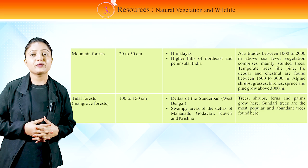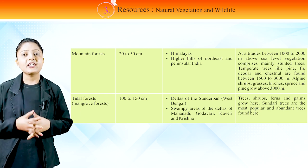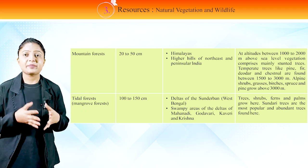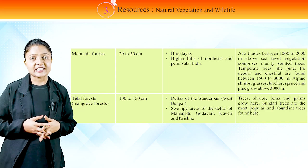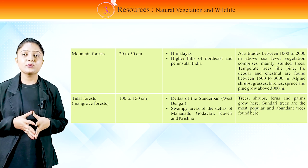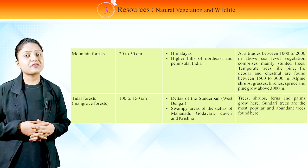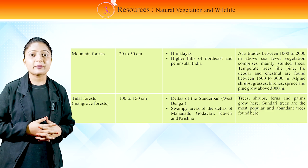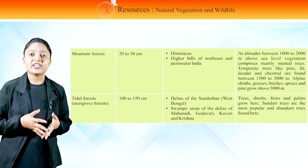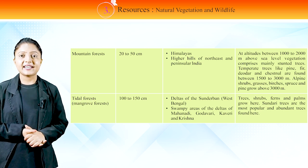Mountain forest: Rainfall 20 to 50 cm. Location: Himalayas, higher hills of northeast and peninsular India. At altitudes between 1000 to 2000 m above sea level, vegetation comprises mainly stunted trees. Temperate trees like pine, fir, deodar and chestnut are found between 1500 to 3000 m. Alpine shrubs, grasses, birches, spruce and pine grow above 3000 m. Tidal forest / Mangrove forest: Rainfall 100 to 150 cm. Location: Deltas of Sundarbans, West Bengal; swampy areas of the deltas of Mahanadi, Godavari, Kaveri and Krishna. Vegetation: Trees, shrubs, ferns and palms grow here. Sundari trees are the most popular and abundant trees found here.